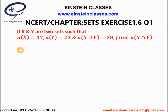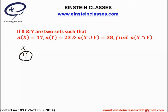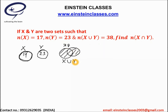Now we are going to discuss this problem. The number of elements in set X is equal to 17. Another set Y has the number of elements 23. X union Y is the complete one and this will have the total number of elements 38. Now we have to find the number of elements in the set X intersection Y.